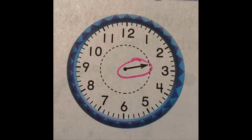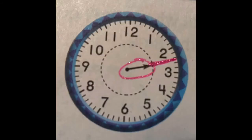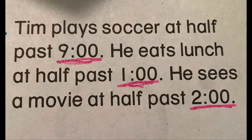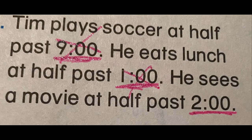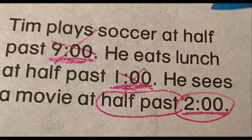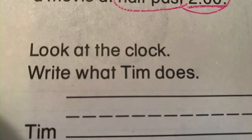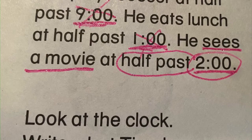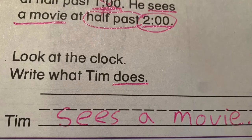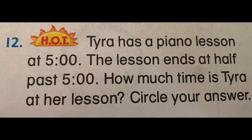We need to know what Tim is doing at the time shown on this clock. There's our hour hand — it is between the two and the three, which means it is half past two o'clock. So where do we see half past two o'clock? Not here, not here — here it is: half past two o'clock. But remember, in this problem we're not writing the time, we're writing what Tim does. What does the problem say Tim does at half past two o'clock? He sees a movie.